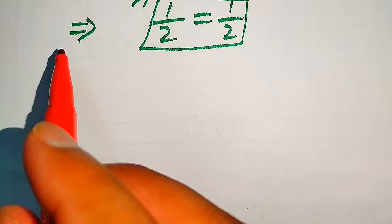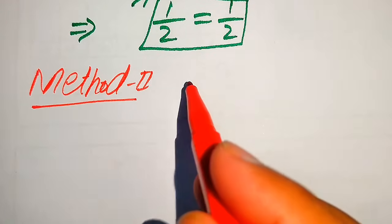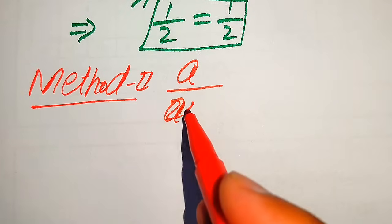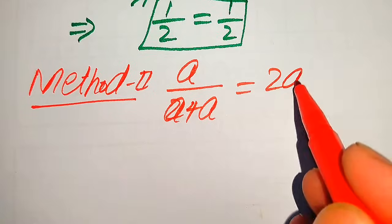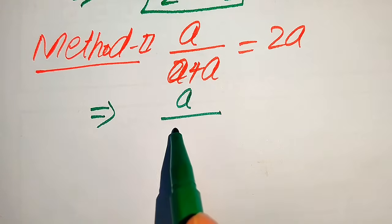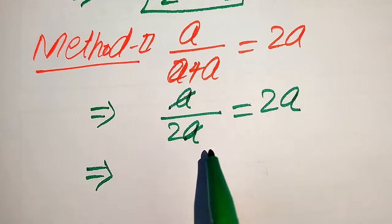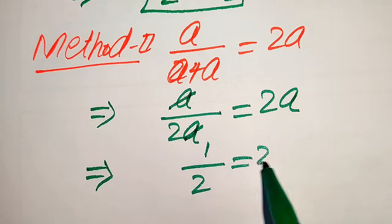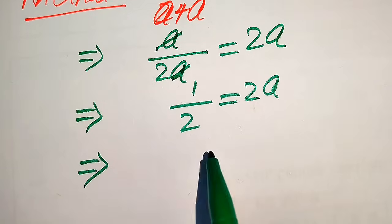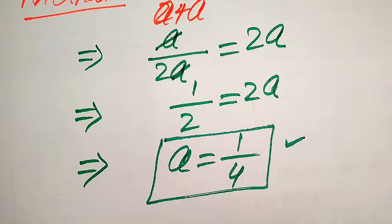In the second method, we start with a divided by (a plus a) equals 2a. Since a plus a equals 2a, the equation becomes a divided by 2a equals 2a. The a cancels out, giving one-half equals 2a. Moving the 2 to the left-hand side, we get a equals one-fourth — confirming the same answer as in the first method. This is the final answer.